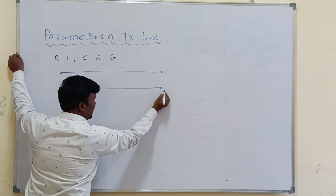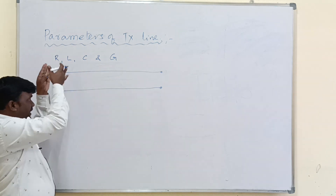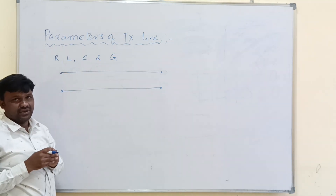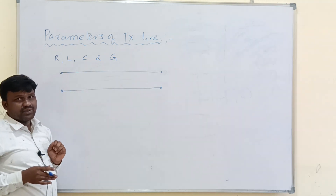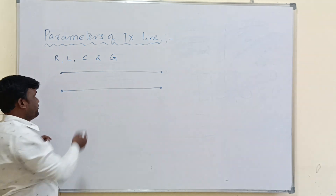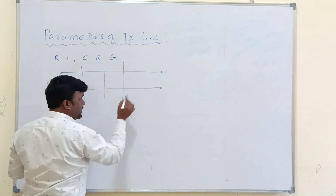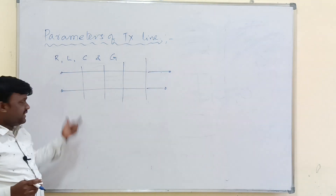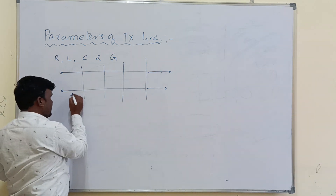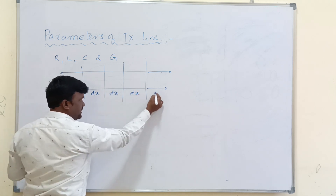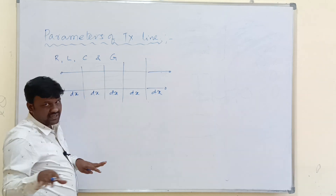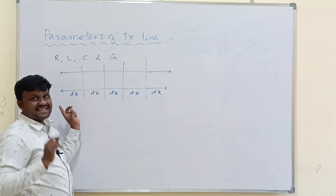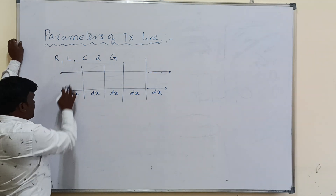Consider a transmission line of length L. If you divide it into equal parts, each and every part consists of R, L, C, and G, and they are uniformly distributed. That's why a transmission line is an example of a distributed network. In a distributed network, the element values are the same at each and every point along the given length.